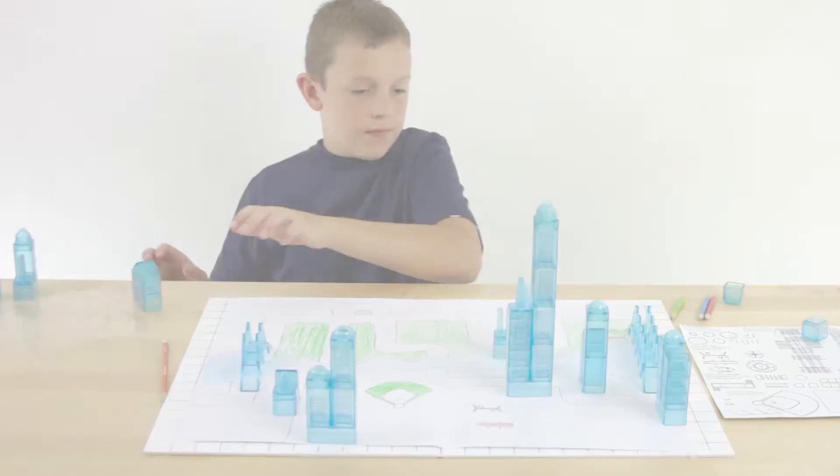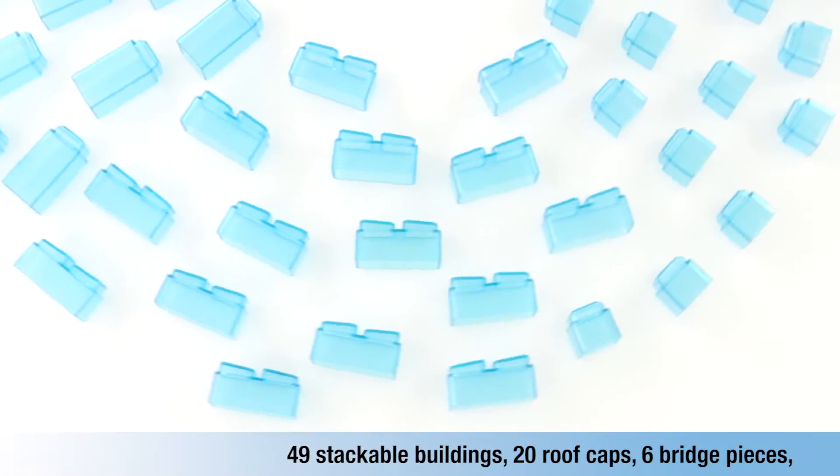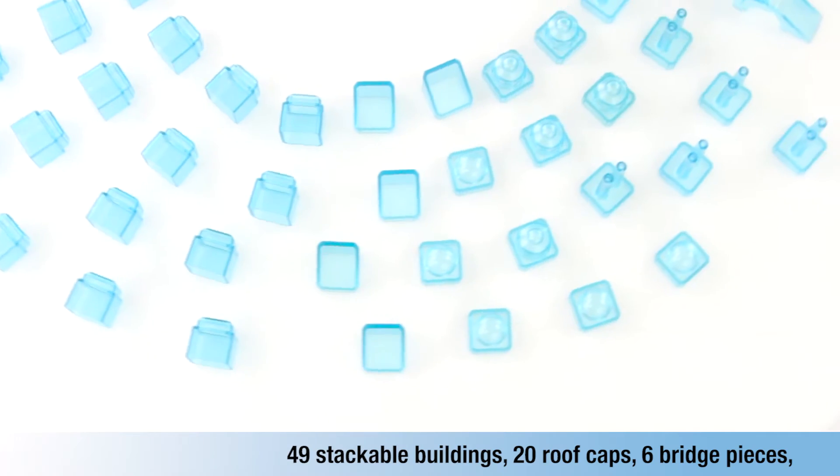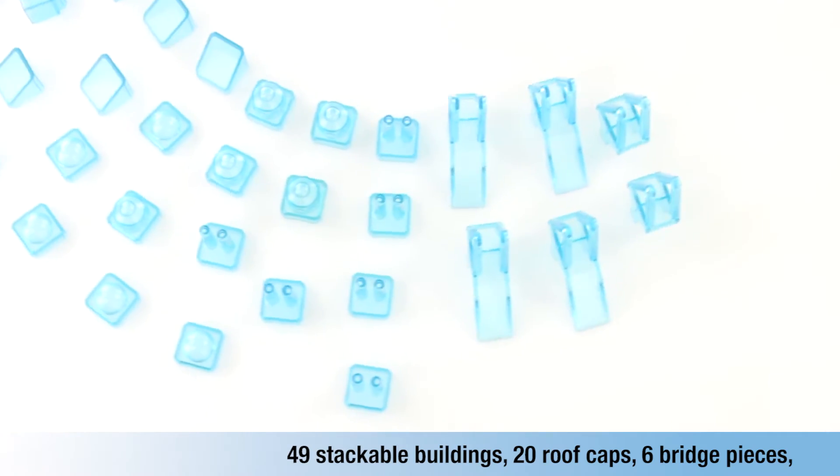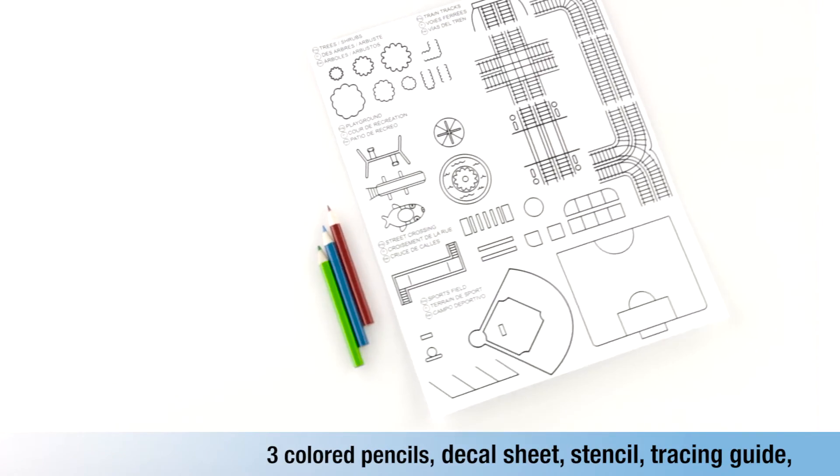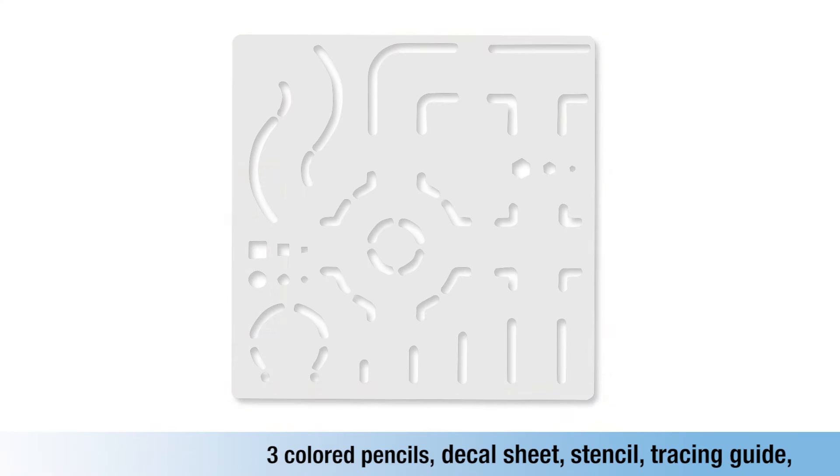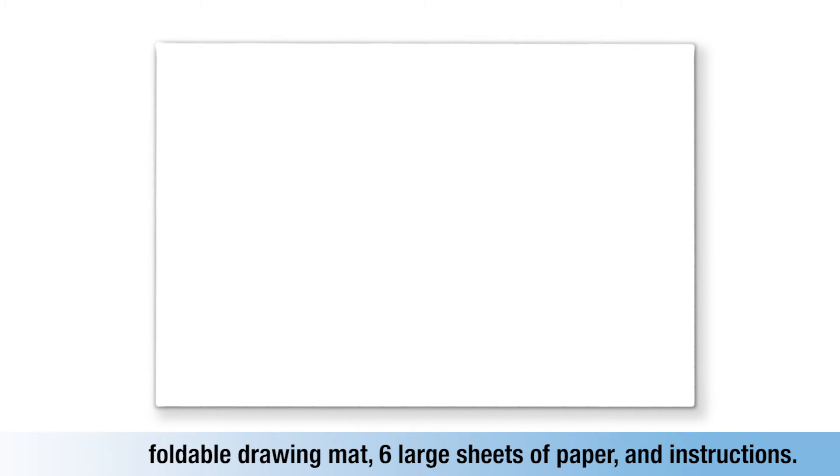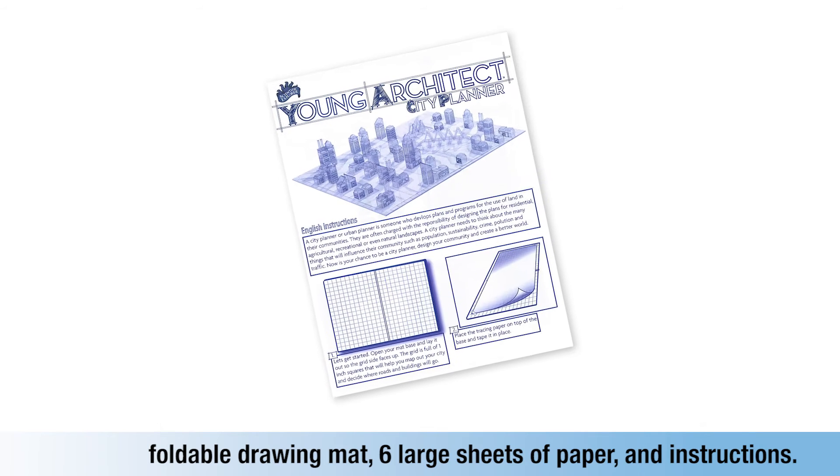Young Architect City Planner includes 49 stackable buildings in 3 shapes, 20 roof caps in 4 styles, 6 bridge pieces, 3 colored pencils, decal sheet, stencil, tracing guide, foldable drawing mat, 6 large sheets of paper to create landscapes, and instructions.